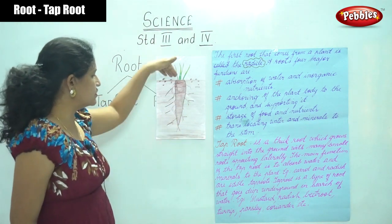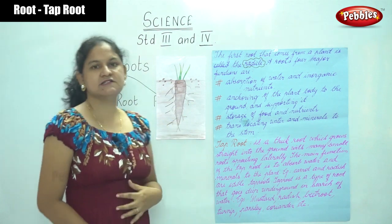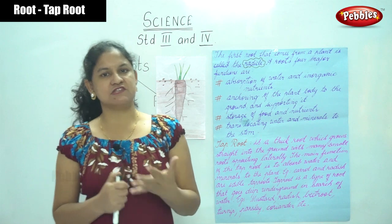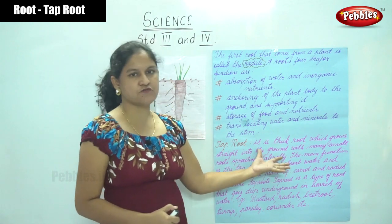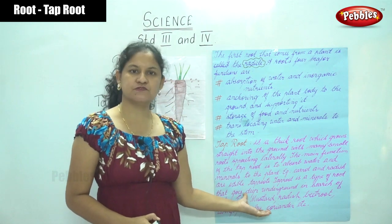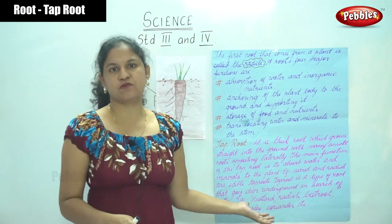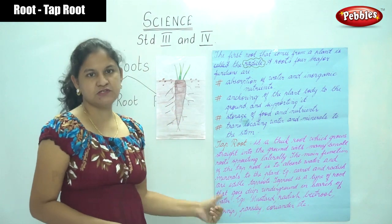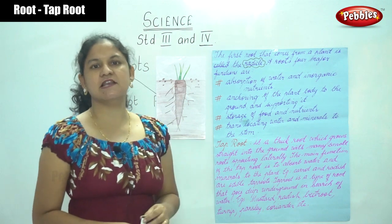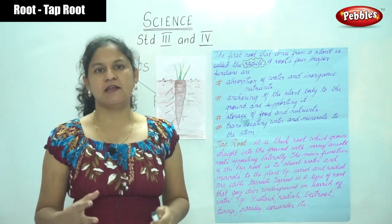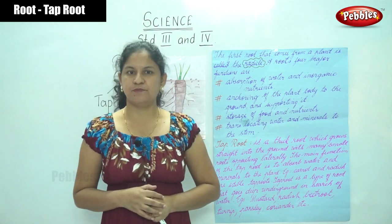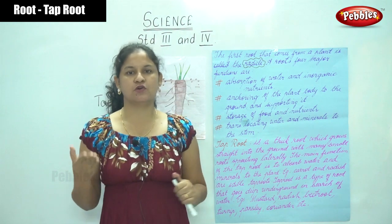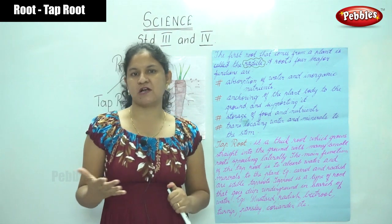So we have seen the four main functions of the root, and out of the two main types of root — tap root and fibrous root — we have seen in detail about the tap root. Edible tap roots include carrot, radish, beetroot, coriander, and parsley.